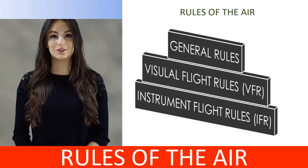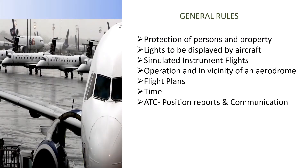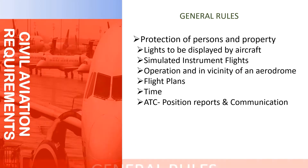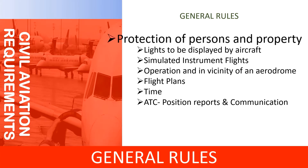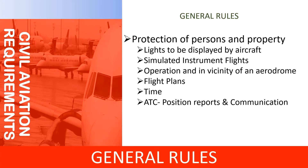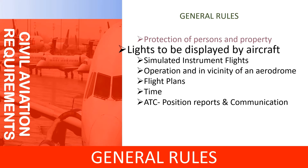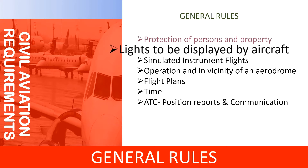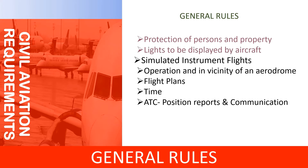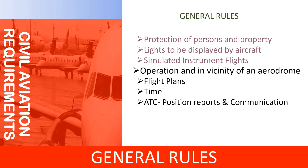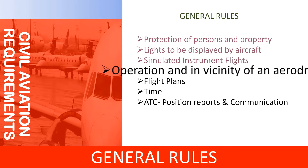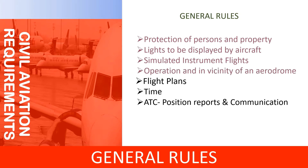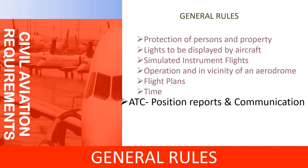General Rules mainly focus on seven categories: Protection of persons and property; Lights to be displayed by aircraft; Simulated instrument flights; Operation on and in the vicinity of an aerodrome; Flight plans; Time; and ATC position reports and communication.